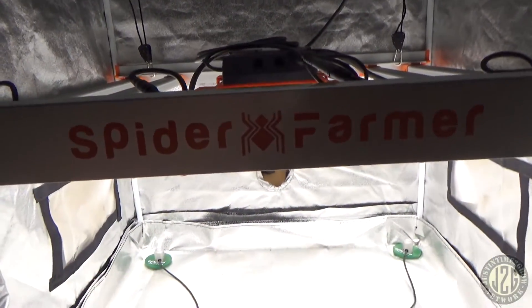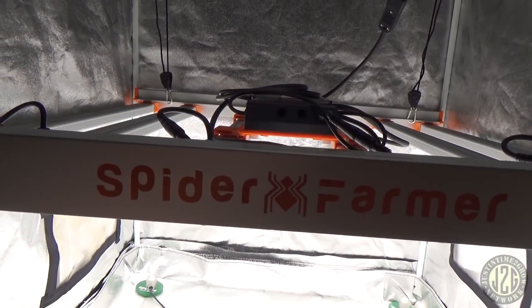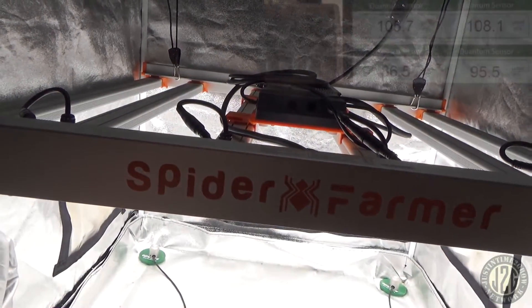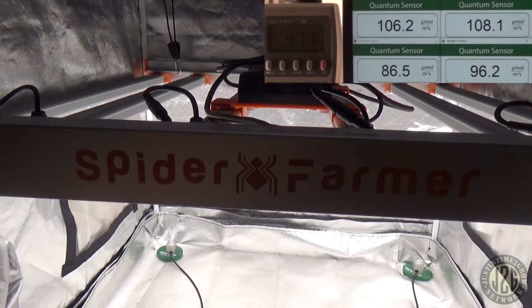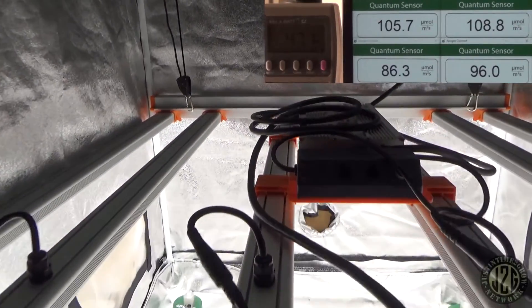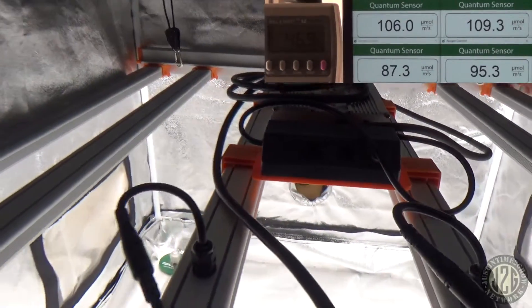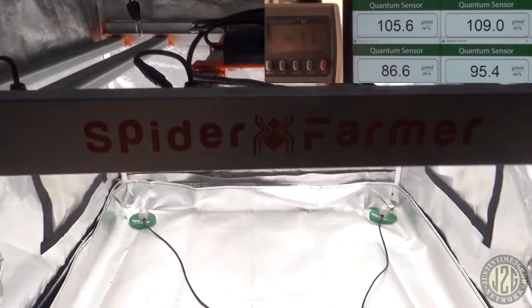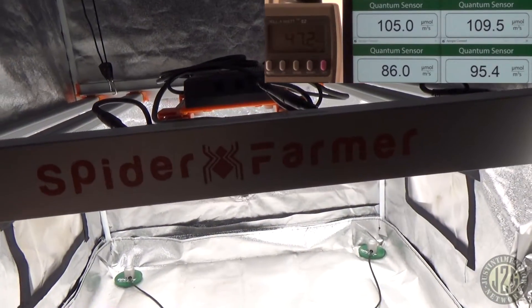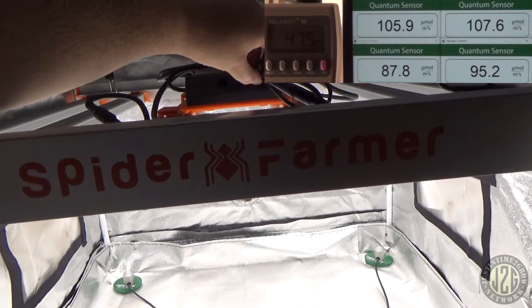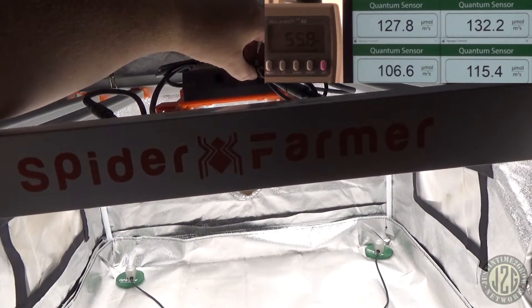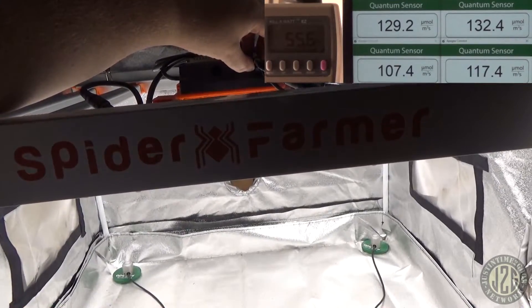All right, so let's get the watt meter fired up here and we'll see what we're pushing. Looking like 47 watts, we're at the bare minimum right now, as low as it'll go, pushing about 100 par to the corners. So a little bit weak to really do a whole lot of anything. Let's turn it up a little bit. We'll try and get to seedling and clone area.